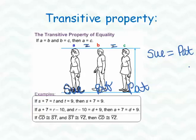Examples of that would be if S plus 7 is equal to T and T is equal to 9, then I know that S plus 7 is equal to 9. Another example, A plus 7 is equal to R minus 10, and R minus 10 is equal to D plus 9. Then A plus 7, which is what we had at the beginning, would be equal to D plus 9. One more example, if line segment CD is congruent to line segment ST and line segment ST is congruent to line segment YZ, then I'm able to conclude that line segment CD is congruent to line segment YZ.